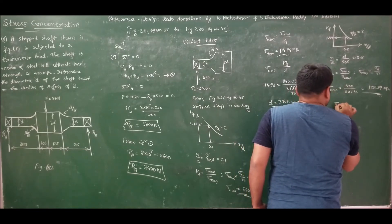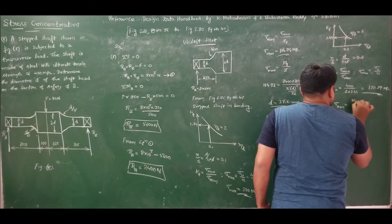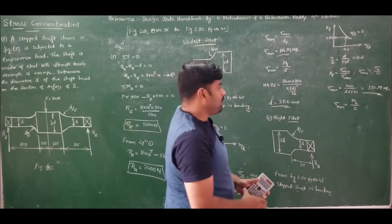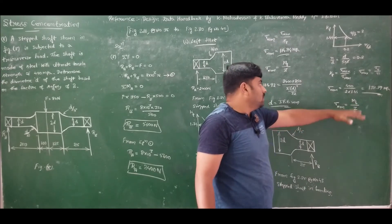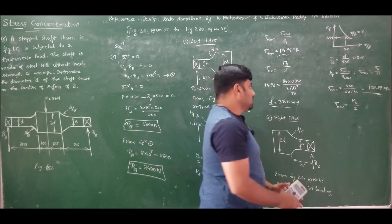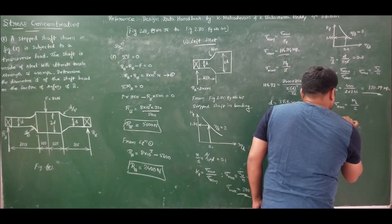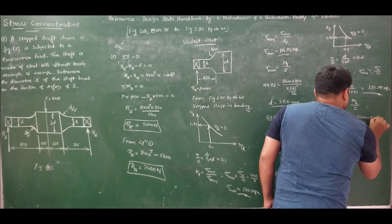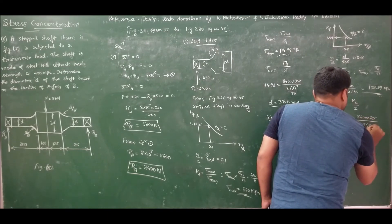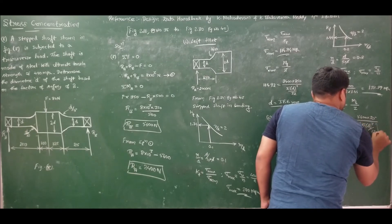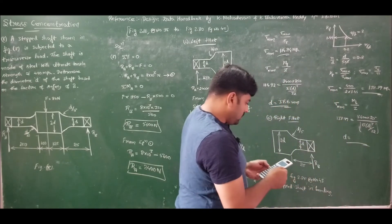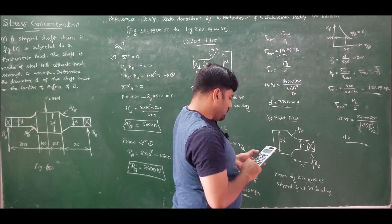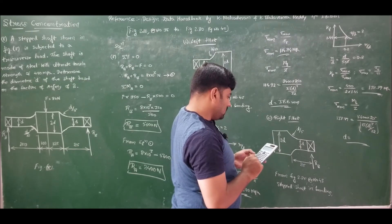For pure bending on the right fillet: σ_nominal = M_B / Z = (Rb × distance) / (πD³/32). Substituting: 138.89 = (5600 × 25) / (πD³/32). Solving: D = cube root of (5600 × 25 × 32 / (π × 138.89)) = 21.73 mm.